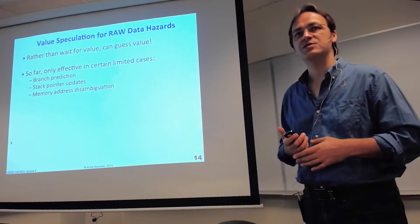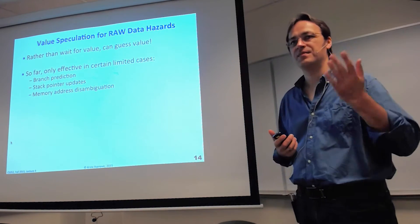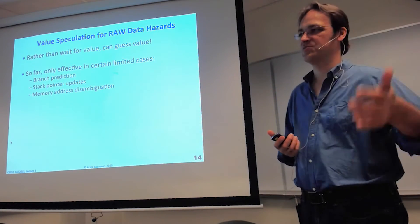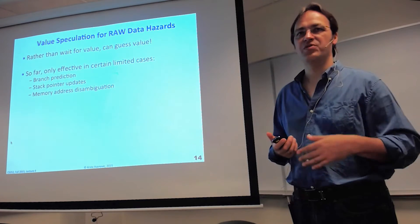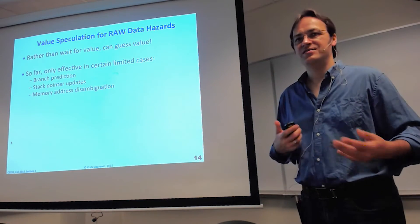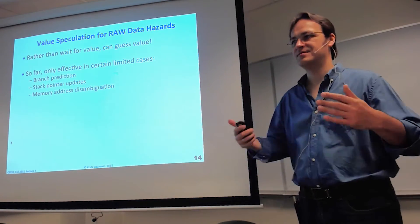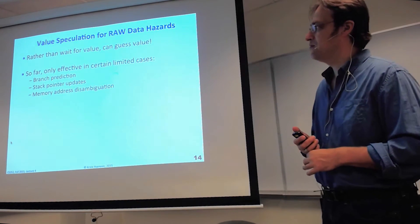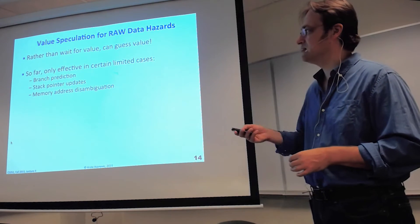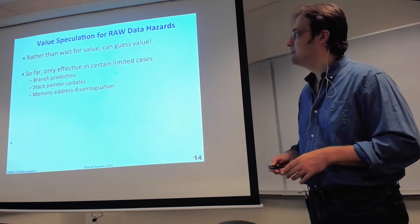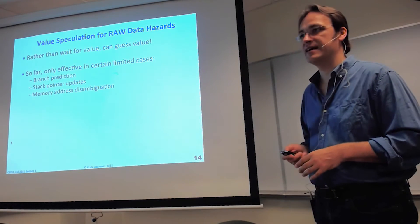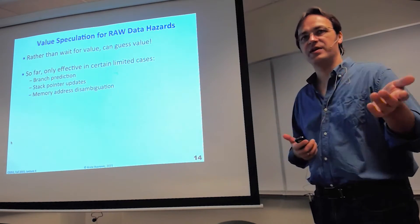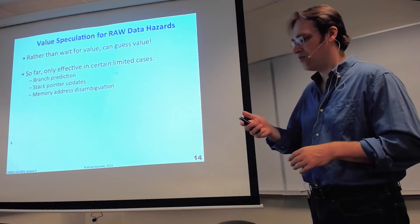Full-on value speculation — doing a load from memory and guessing what value it will return — doesn't seem to work very well. There have been many proposals and people have tried it, but it's hard to do better than the structure you need to hold the value prediction; you may as well turn that into a cache. So full value speculation is very difficult, but it's very useful in these restricted areas. This removes read-after-write data hazards but requires a correction mechanism if the guess was wrong.